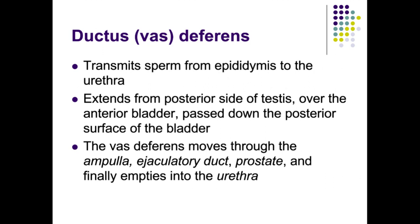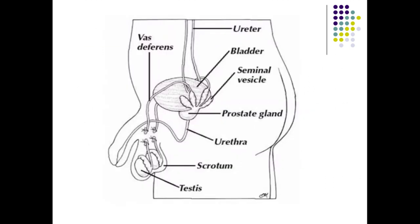The vas deferens is responsible for transmitting sperm from the epididymis to the urethra. It comes out of the testes, loops up and over the bladder, and the right and left vas deferens converge into an area called the ejaculatory duct. At this site, accessory glands input their materials to form seminal fluid. From the ejaculatory duct, semen then travels to the urethra and out of the body.